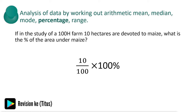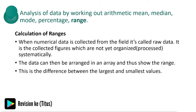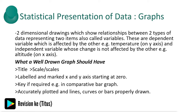Percentages: for example, if in a study of 100 hectares of farmland, 10 hectares are devoted to maize, what is the percentage of the area under maize? That is 10 over the total multiplied by 100, which gives us the percentage. We also calculate ranges. When numerical data is collected from the field it's called raw data — it is collected figures which are not yet organized. The data can be arranged in an array and thus show the range, which is the difference between the largest and the smallest values.